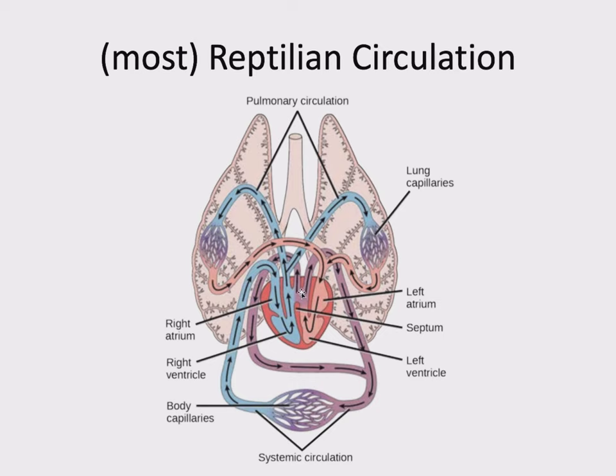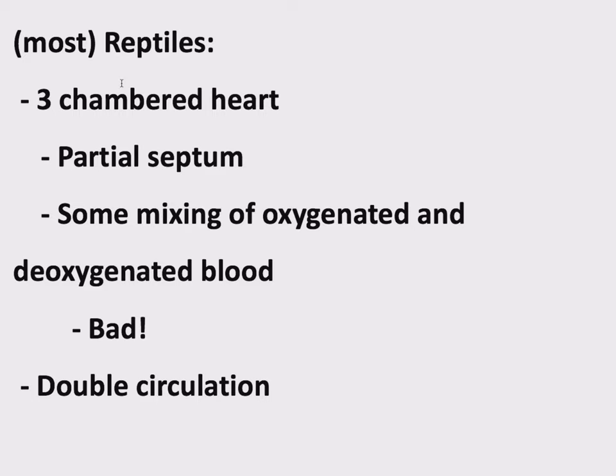Most reptiles have a three-chambered heart. There is a partial septum — a septum is just a wall or barrier. So there is some mixing of oxygenated and deoxygenated blood. This is not ideal, but it is what it is. This is still double circulation, but you have this mixing.